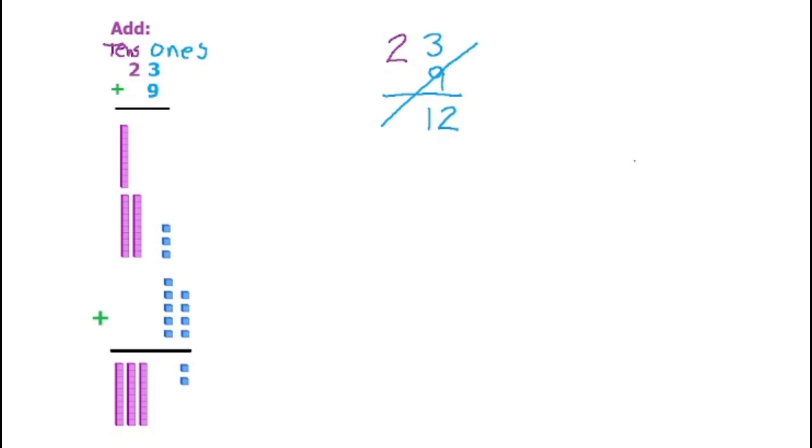So you wouldn't go through all that trouble each time you want to add something. So how would you do it normally? So you would have 23 plus 9. So we said it was 12. So we put the 2 here. But we carry the 1 to here from the 12.